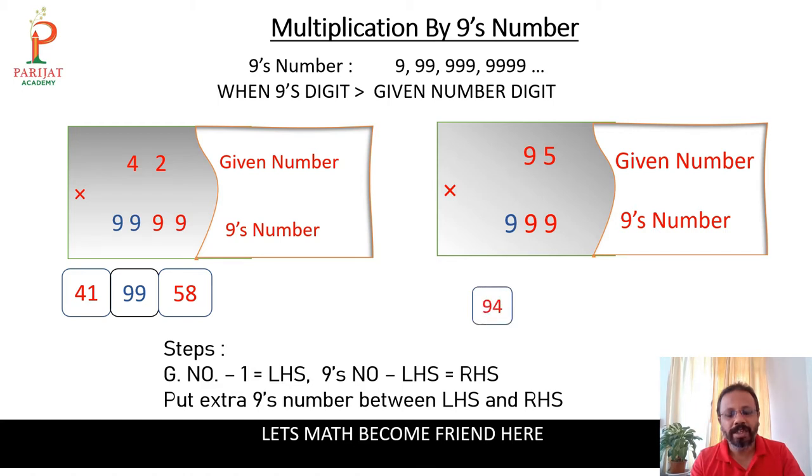And extra 9s, only one 9 is extra so I will keep extra 9 after 94 and I will write down complementary of 94 by base 9 which will be 05. So our answer will be 94905.